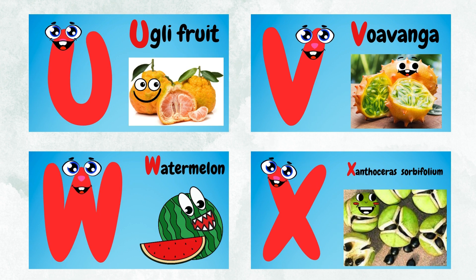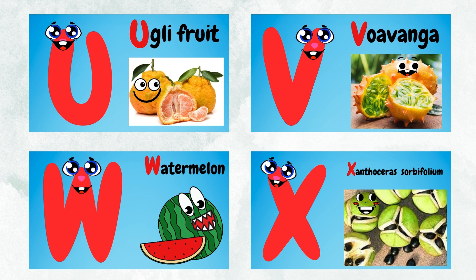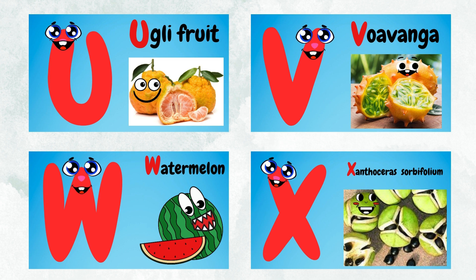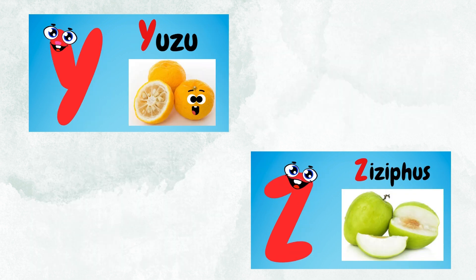V for uvanga, W for watermelon, X for xango, Y for yaris, Z for ziziphus.